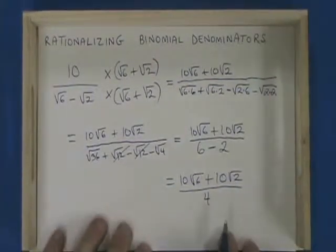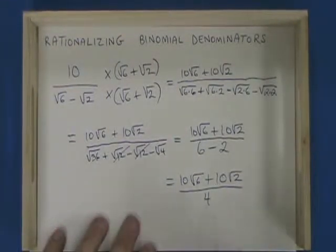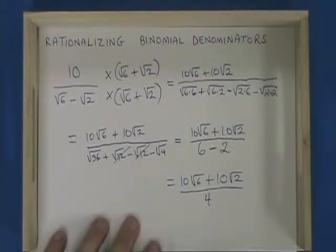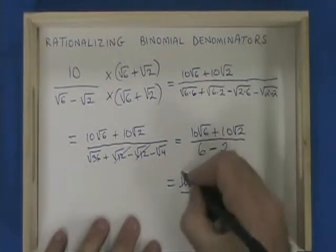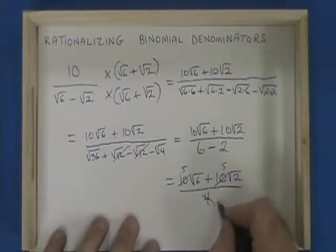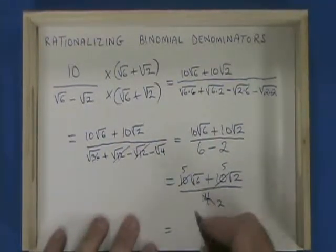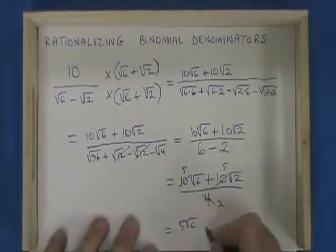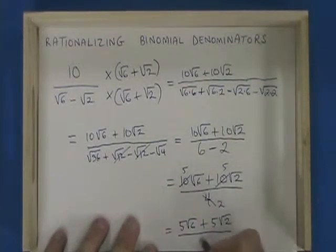And we are done, or almost. One last thing. We now have a cancelling opportunity. 10, 10, and 4 have a common factor of 2, so I'm going to cancel out a 2. That turns both 10s into a 5, and it turns the 4 into a 2. Our final answer is 5 root 6 plus 5 root 2 over 2.